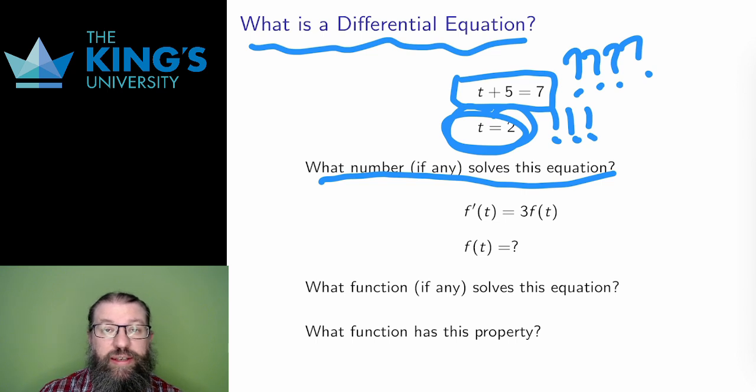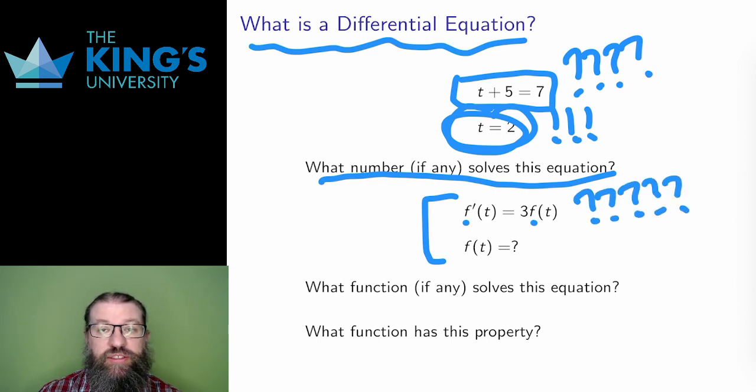A differential equation is like an algebraic equation, but it is now an equation of functions, not of numbers. The elements of the equation are different functions of some fixed independent variable, in this case, t. Like an algebraic equation, a differential equation is always implicitly a question. Where an algebraic equation asks what number, a differential equation asks what function.